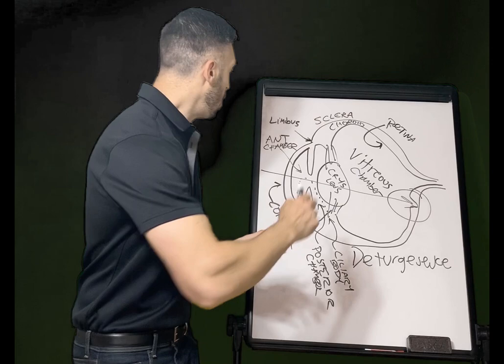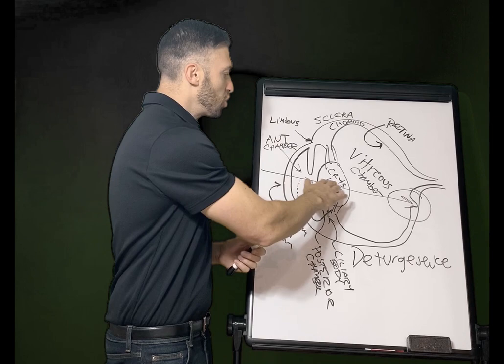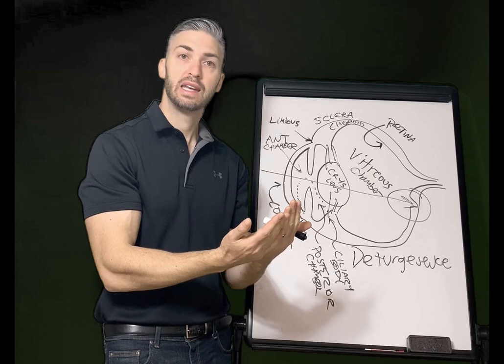The refractive media of the eye are the cornea, which supplies roughly plus 43 diopters, and the crystalline lens, which supplies roughly plus 17 diopters of strength at rest, with an increased accommodative amplitude when converging to read things at near point.